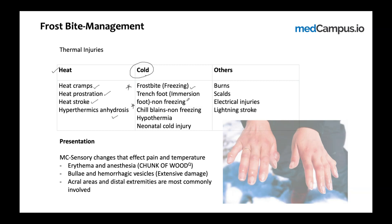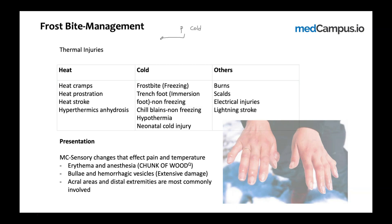Frostbite, trench foot, and chilblains are peripheral cold injuries. Cold injuries can be peripheral or central. Hypothermia is a centrally induced cold injury, while frostbite, trench foot, and chilblains are peripheral. There is also neonatal cold injury, which is central. Within peripheral cold injuries, there is a further classification: freezing and non-freezing.